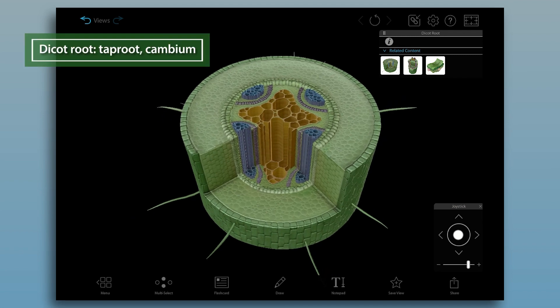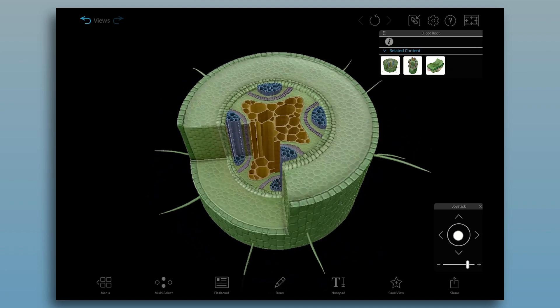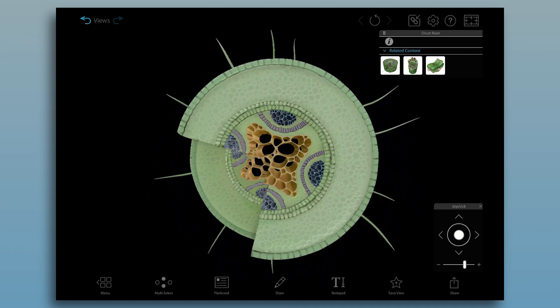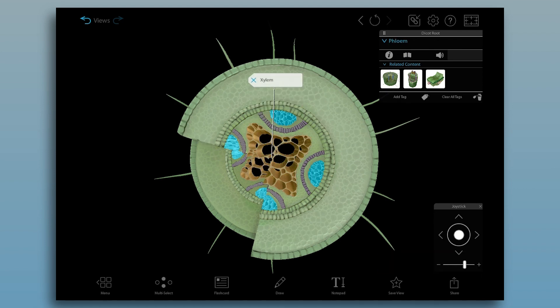Now let's look at dicots. Dicot roots have a tap root structure, meaning they have one thick root with lateral branches that extends deep into the soil. You'll notice that the xylem is located in the center of the root, with the phloem around it.